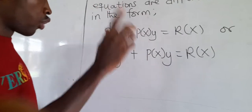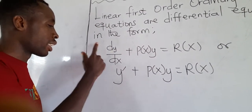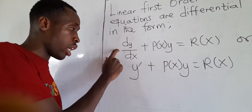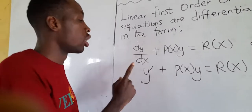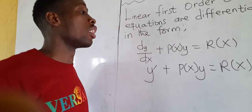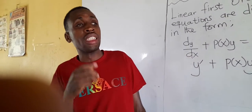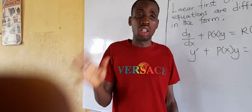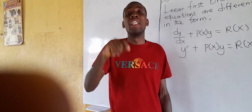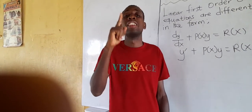When solving linear first order ordinary differential equations, you must always check that the coefficient of the derivative is always 1. The coefficient here is 1 — very, very necessary. So before you solve it, check whether it is a linear first order ODE, and after that, check whether the coefficient of the derivative in the equation is 1.